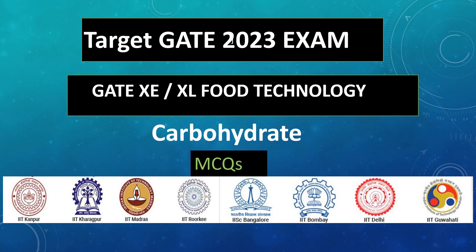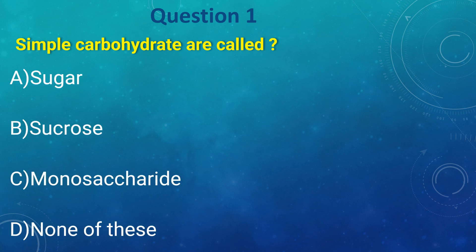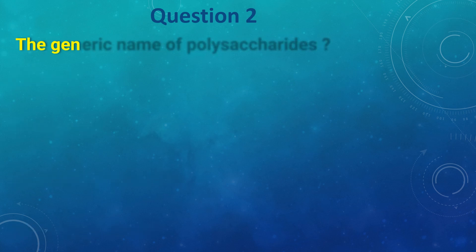Hello friends, welcome back to our channel. Today we are discussing carbohydrates, so let's start. Simplest carbohydrates are called: a) sugar, b) sucrose, c) monosaccharides, d) none of these. The answer is sugar. The generic name of polysaccharides is: